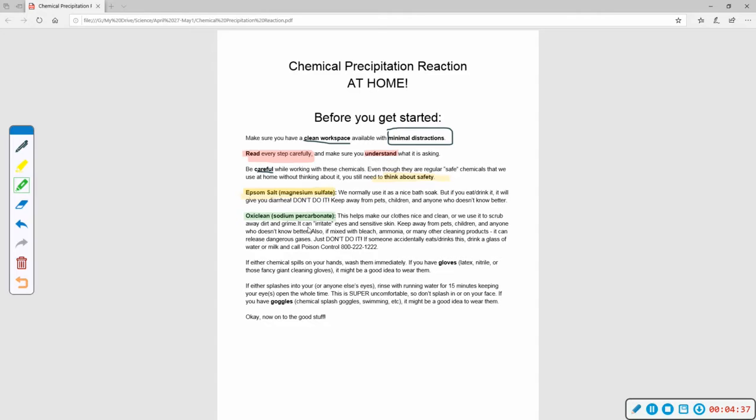If someone accidentally eats or drinks this, please drink a glass of water super quick or some milk. Notify your parents and call poison control. Just don't even joke about it. Don't even play. Keep yourself safe. Okay. So if either of these chemicals spill on your hands, wash your hands immediately. If you have gloves, think of latex gloves, nitrile gloves, or those big, fancy, giant cleaning gloves. It might be a good idea to wear them. Otherwise, if you don't have gloves, just wash your hands off. That's fine. If either of these splashes into your or anyone else's eyes, you're going to be rinsing your eye out with running water for 15 minutes with your eyes open the entire time. It's going to be uncomfortable. You are not going to be having fun. And you better do it for the full 15 minutes. So just don't splash it in your face. Don't splash it in anybody else's face. Don't let anybody splash you or anyone else.